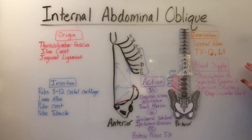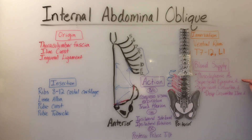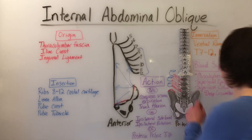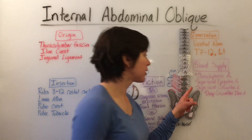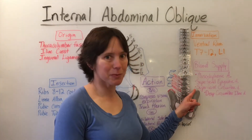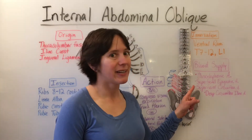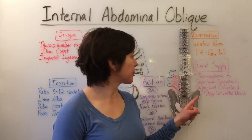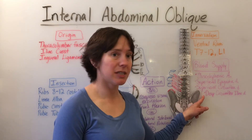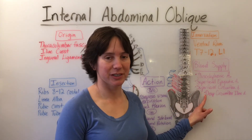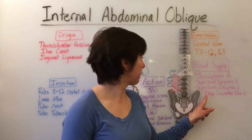The blood supply is similar with the musculophrenic artery, the superficial epigastric artery, the superficial circumflex artery, and in addition, we have the deep circumflex iliac artery.